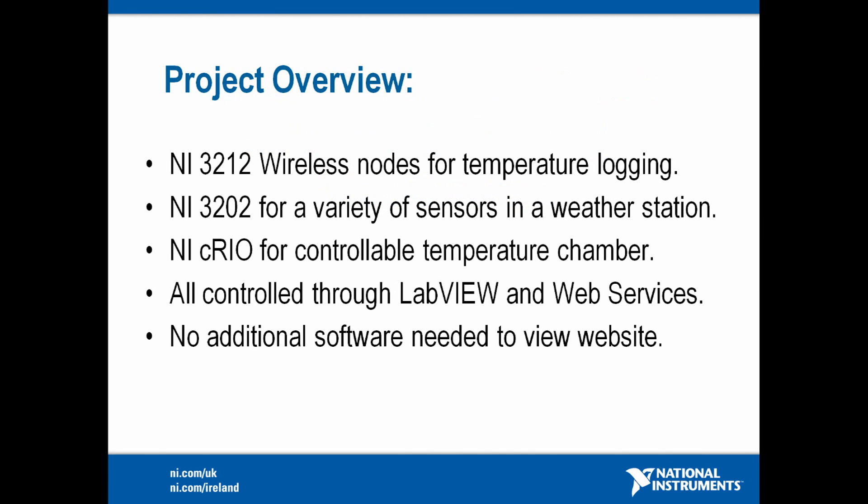We placed four wireless thermocouple nodes in the roof at strategic points around the office. We then collect temperature data and plot it on an interpolated colour map. We then used one analogue input node in an outdoor enclosure as a weather station. This has a thermocouple, an ultraviolet sensor, and an anemometer which was kindly donated by InSpeed, and a solar panel to charge the node.